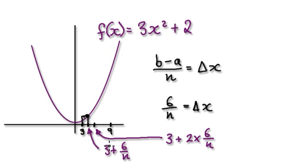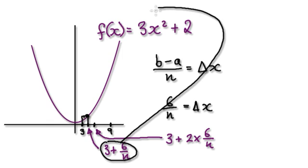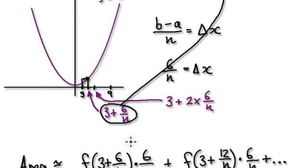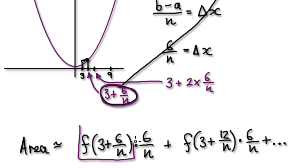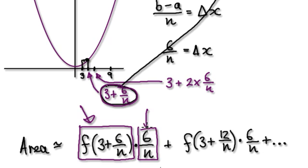So our first triangle here would be us using this and then putting it into the original function. The height of this triangle here is given by putting this into the original function. And then to get the area, we need to times it with the delta x, which in this case happens to be 6 over n.